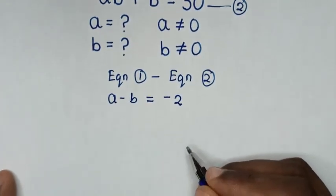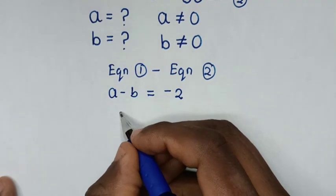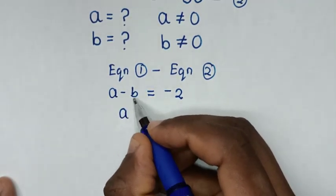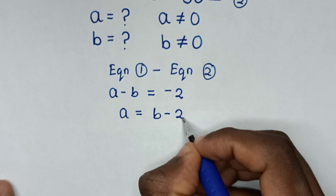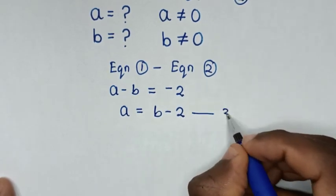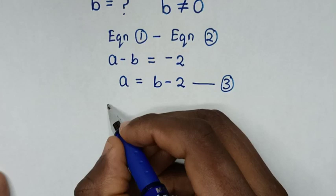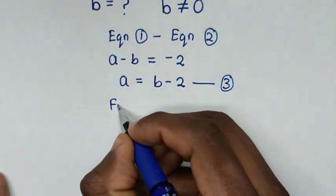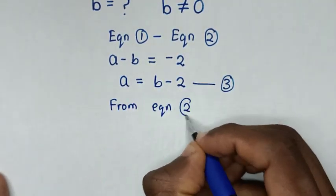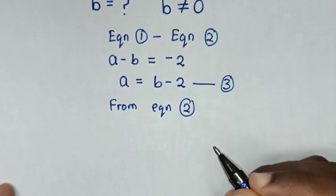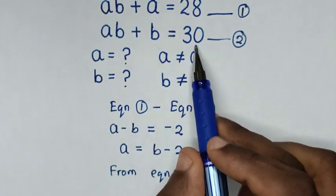In the next step, we'll take negative B to the right side, so it will be A is equal to B minus 2. We'll let this as the third equation. Then from equation 2, which is AB plus B is equal to 30.